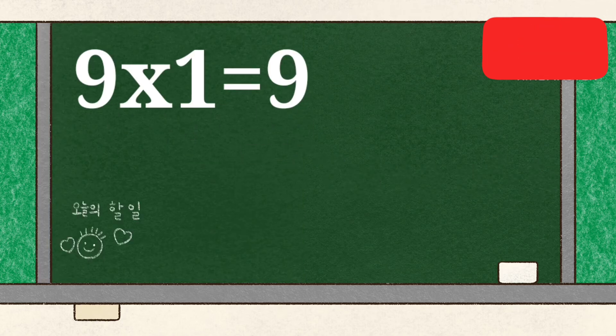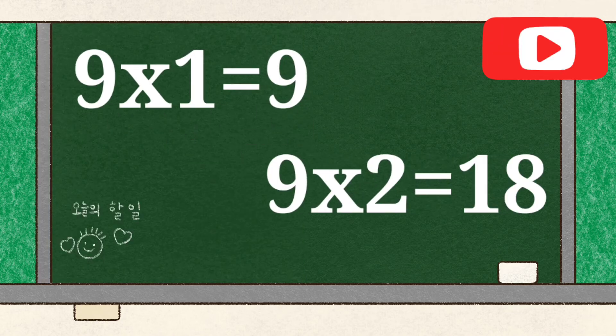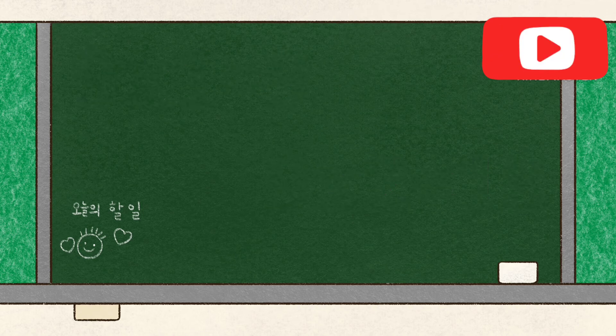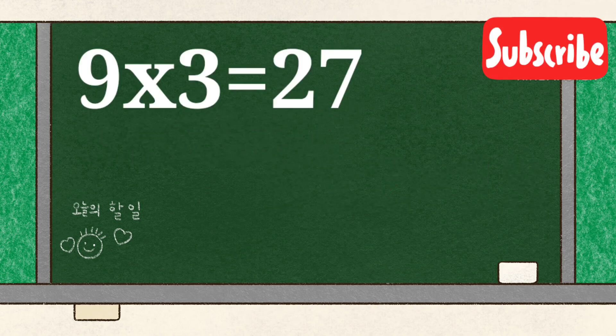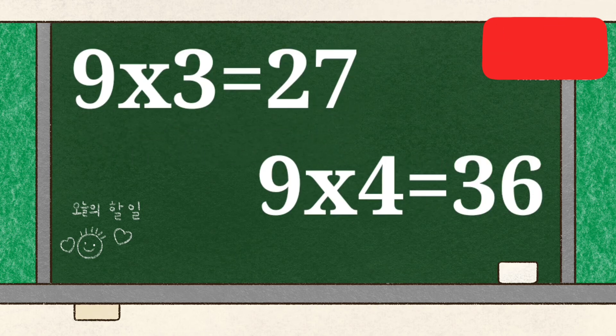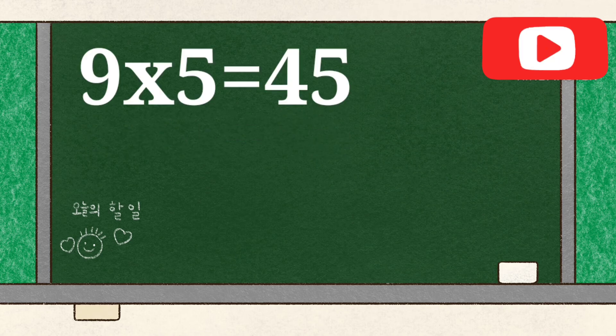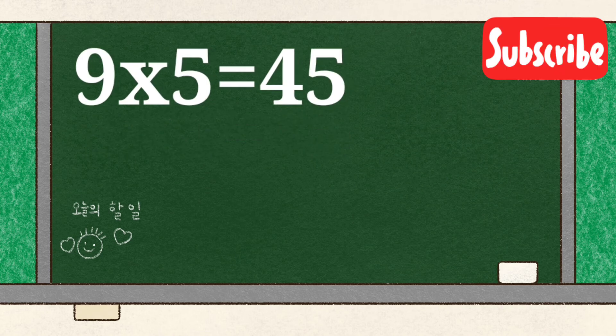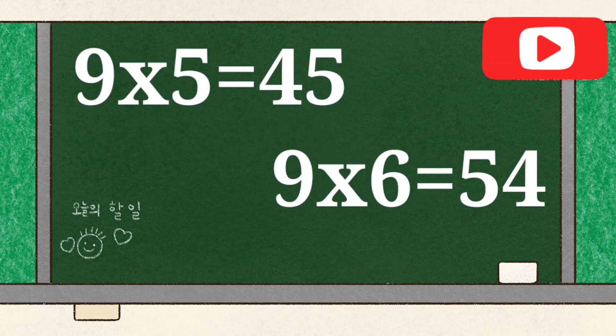9 1's are 9, 9 2's are 18, 9 3's are 27, 9 4's are 36, 9 5's are 45,